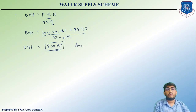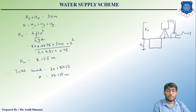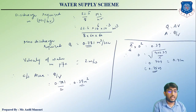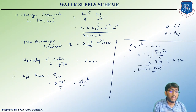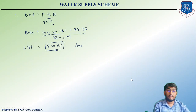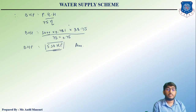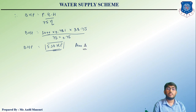So we found two answers: Answer 1 — diameter of pipeline = 0.75 m; Answer 2 — brake horsepower of pump = 530 HP.